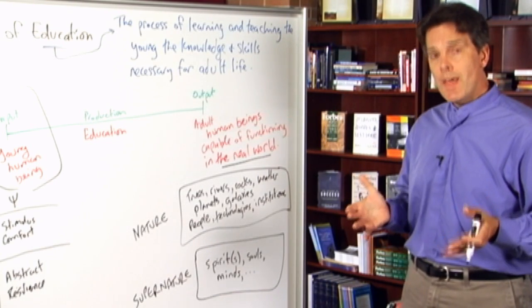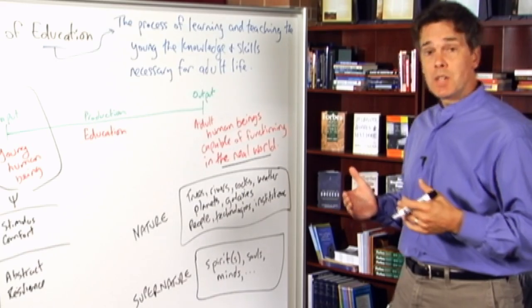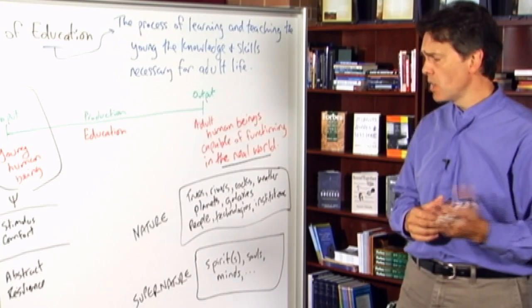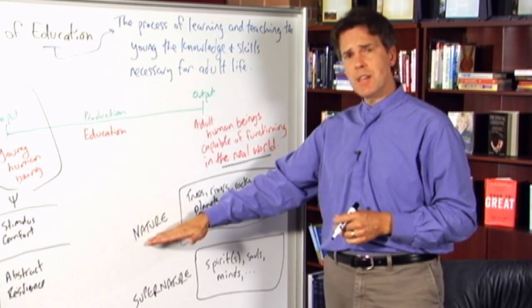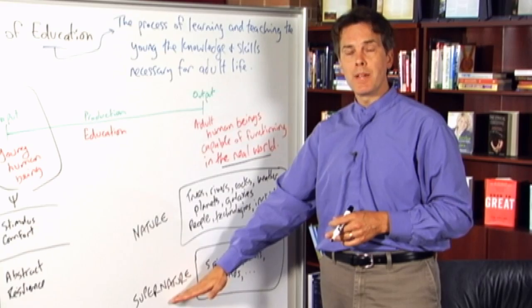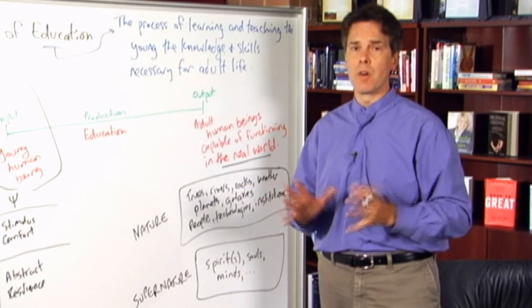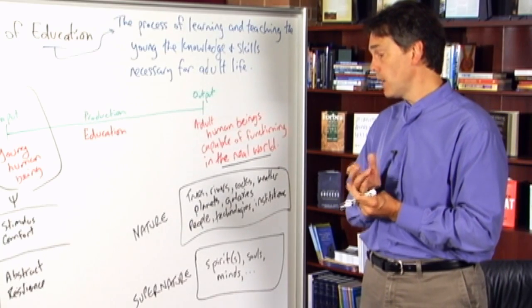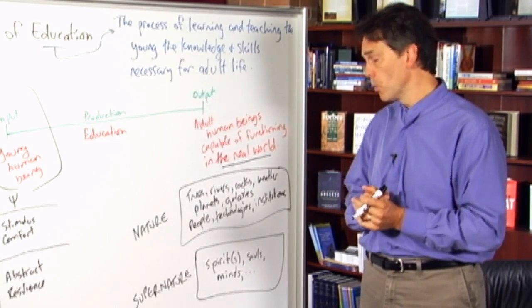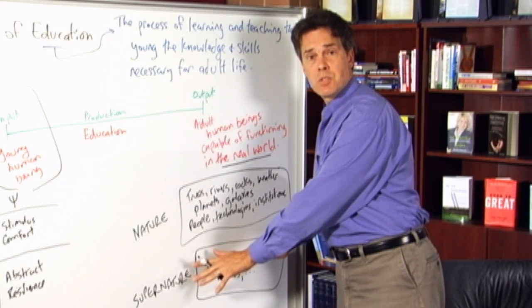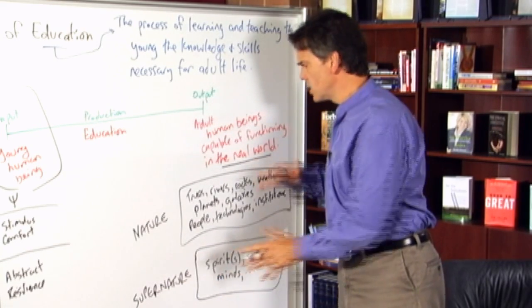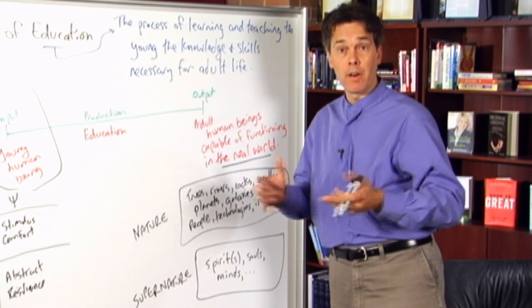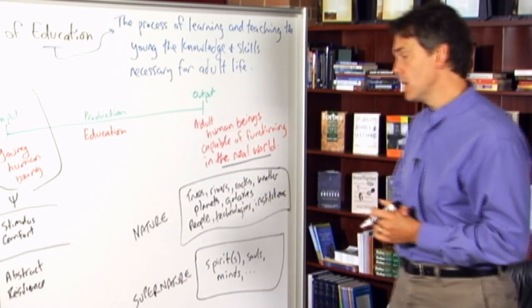Now, if we answer the question that way, that then is going to take our educational system in one direction. By contrast, if we answer the question the other way, we say, look, there is the natural world, that's reality, but the realm of supernature doesn't exist. There are no ghosts, there are no spirits, there are no gods, all of that is primitive belief that has been outmoded, say, in the modern world, and so we are doing our students a disservice if we teach them this stuff. We're interested in teaching reality, and so reality is the natural world, and that is what and only what our educational system should be about.